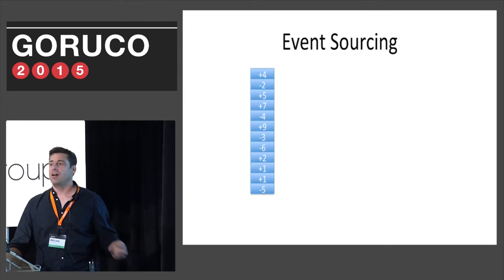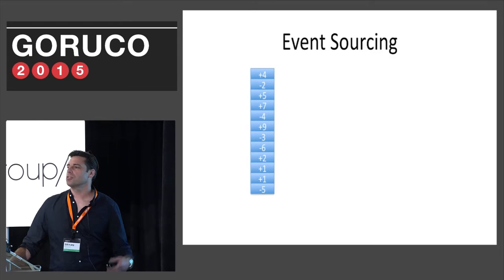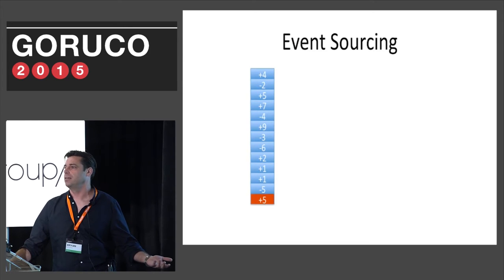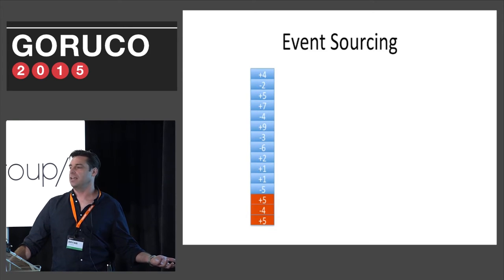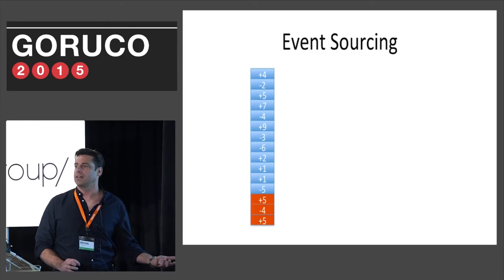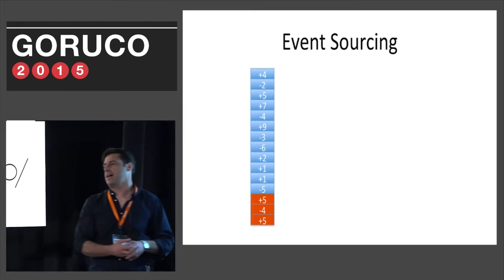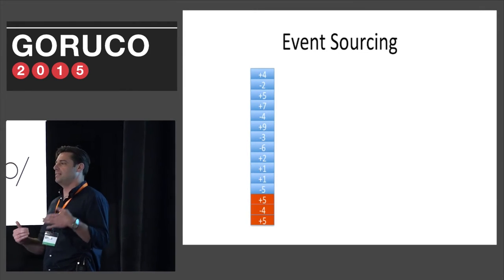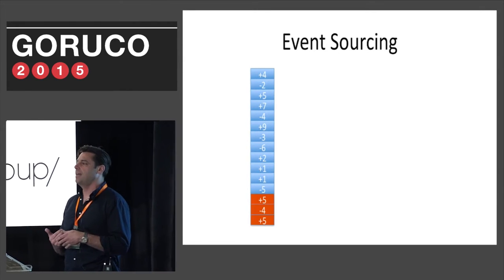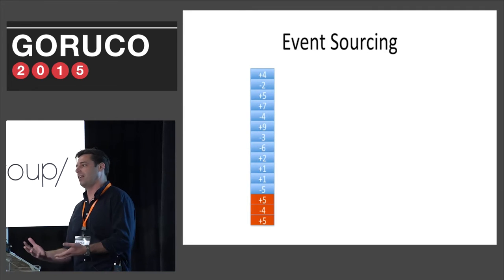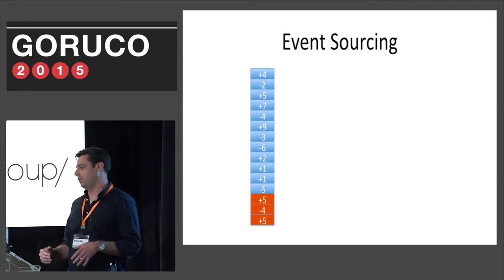Is this more secure? Consider if someone tries to attack me. What's the easiest way? Start sending in erroneous data. No problem, because I have a log of the attack. I can replay up to the point where I detect the attack, and since I have a log of the attack, I can analyze it and protect myself in the future.